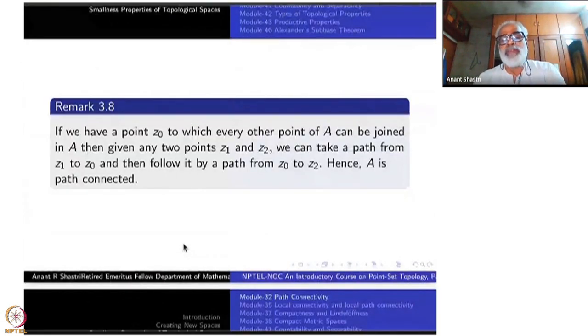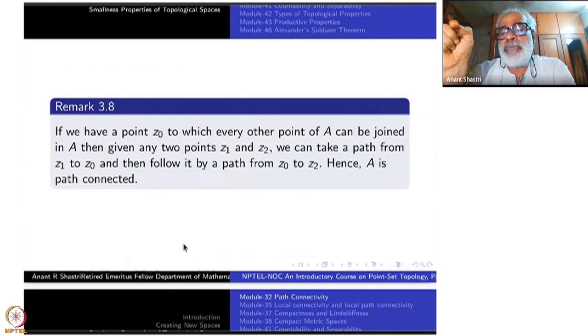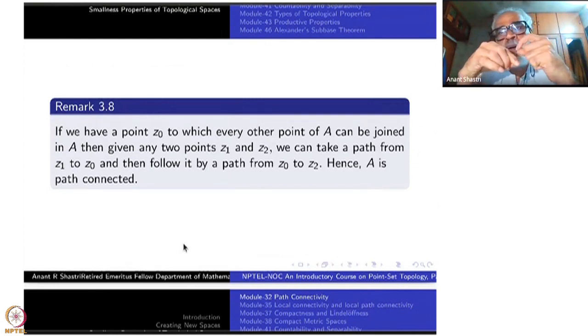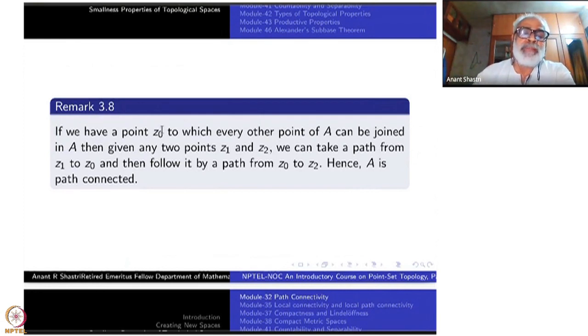If we have one single point z0 inside A to which every other point of A can be joined, then any two points of A can also be joined with each other. What you have to do? First start with z1 to z0 and then z0 to z2. So you take two of the paths like this and use the composition.